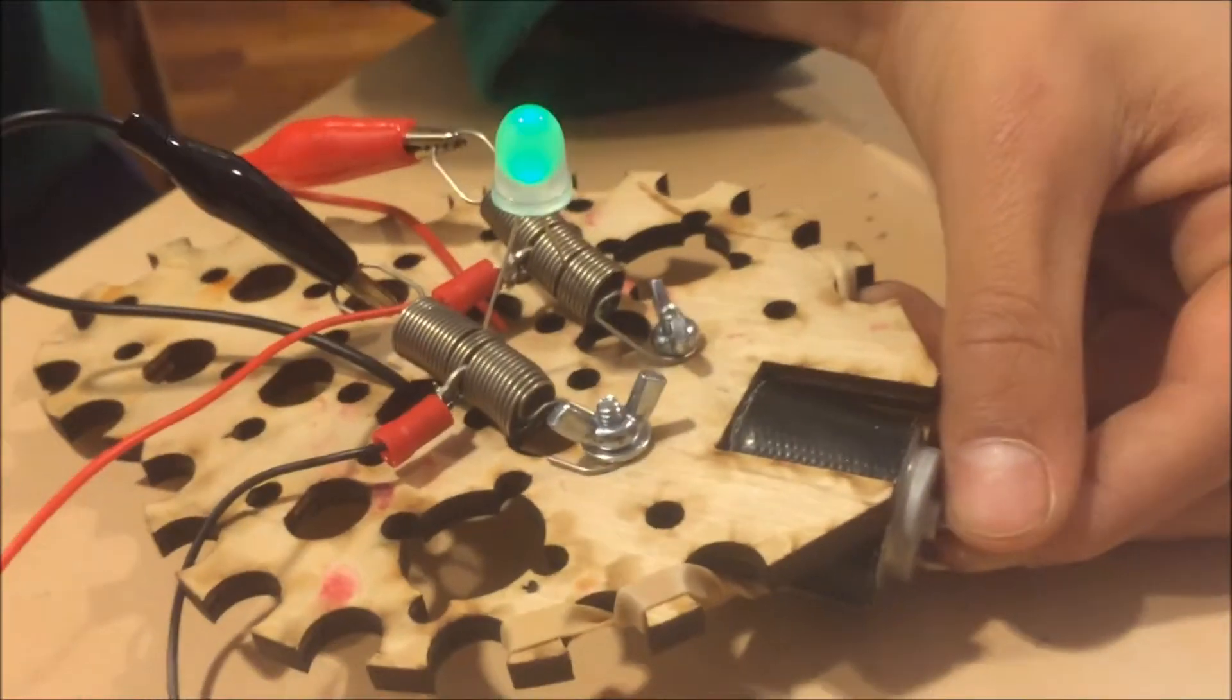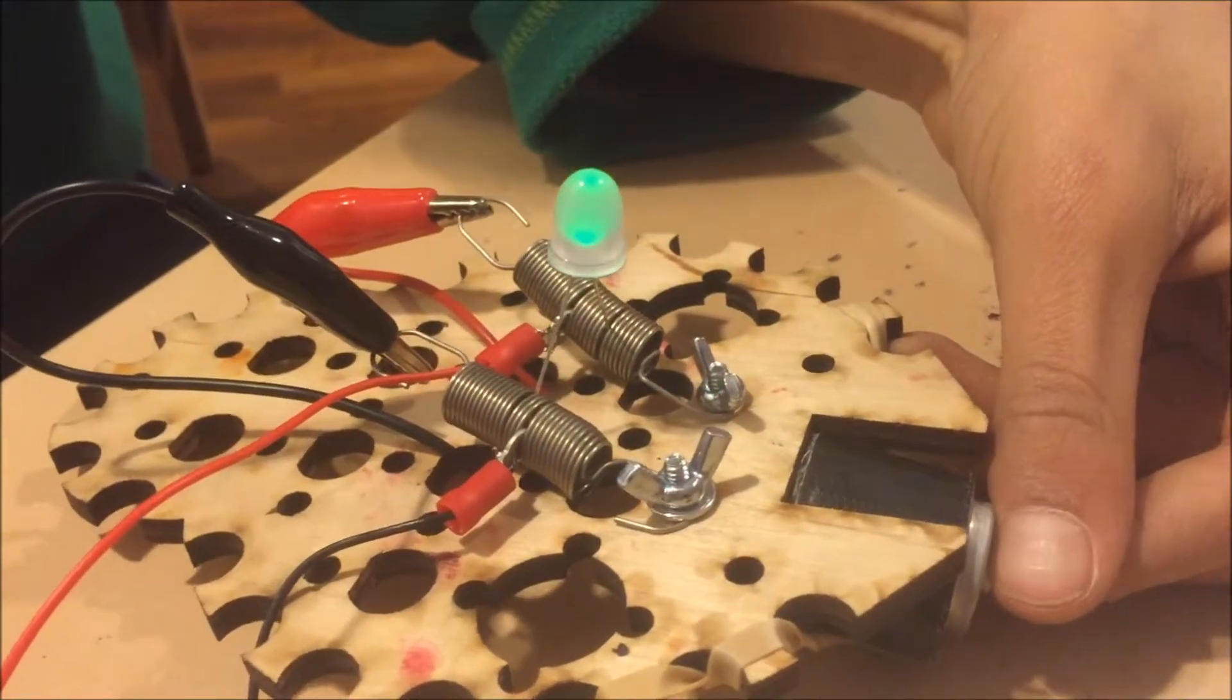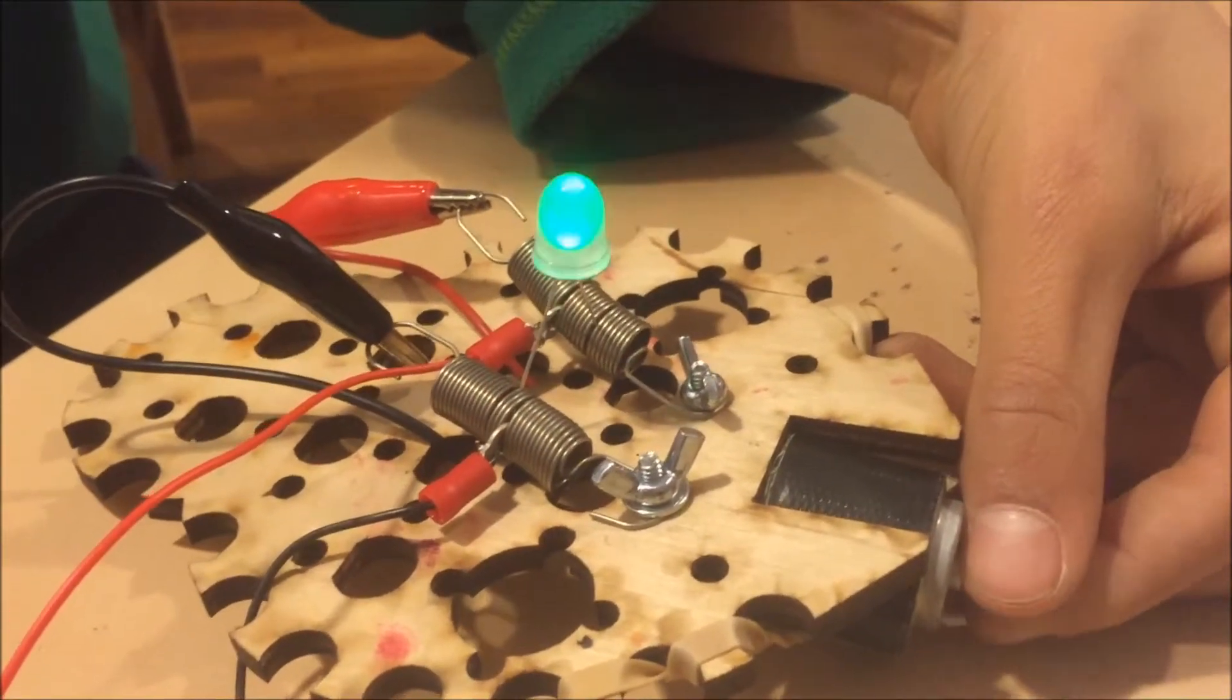So when I'm pressing on the motor and just slowing it down, the LED gets dimmer.